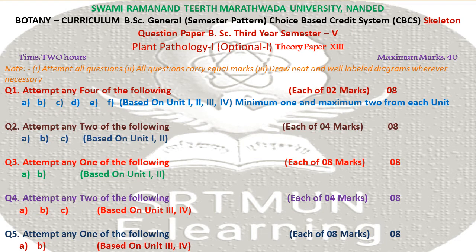Botany curriculum, BSc General, semester pattern, Choice Based Credit System (CBCS). Skeleton question paper, BSc Third Year, Semester 5, Plant Pathology, optional paper. Theory Paper 13. Time: 2 hours. Maximum marks: 40. Note: Attempt all questions. All questions carry equal marks. Draw neat and well-labelled diagrams whenever necessary.